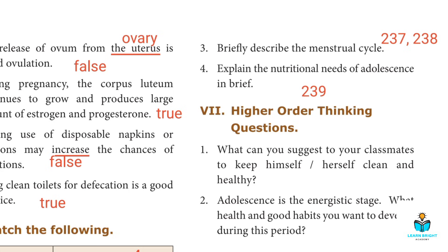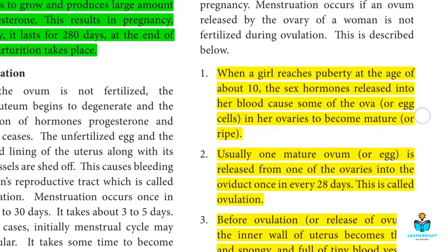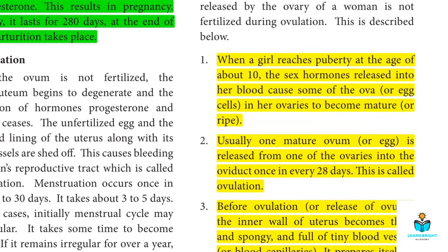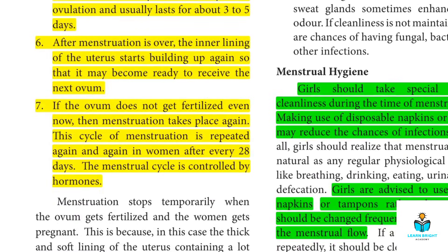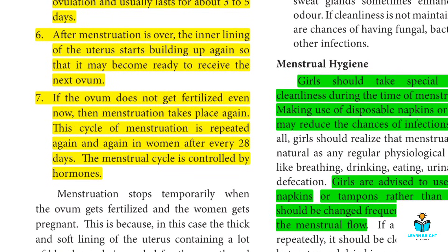Third detail question: Briefly describe the menstrual cycle. The answer is on page numbers 237 and 238. When a girl reaches puberty, cover 4 points on page 237, then 3 more points on the next page relating to hormones involved.